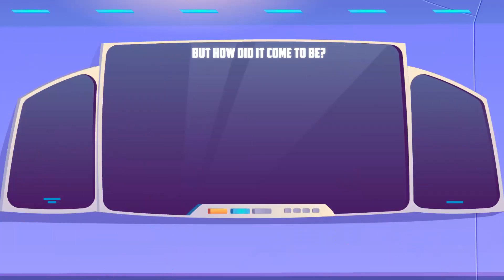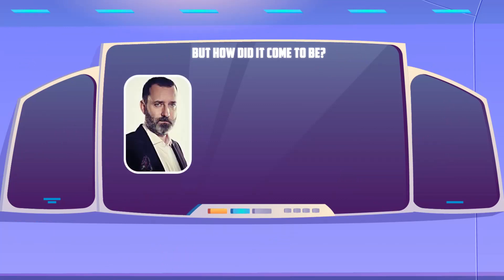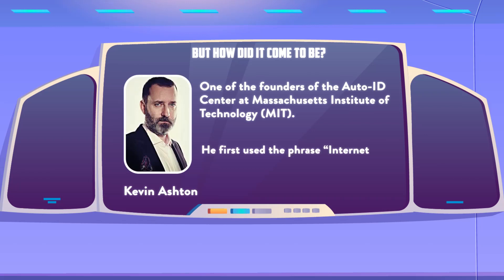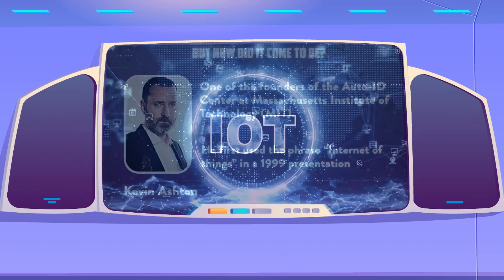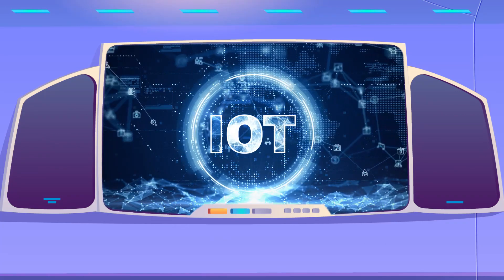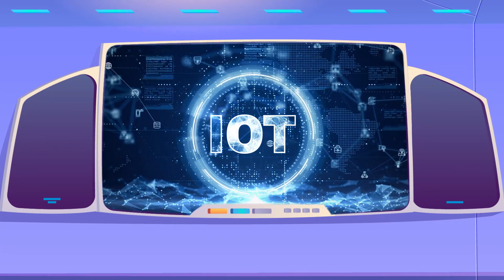But how did we come to be? Going back to its history, the term Internet of Things was coined by entrepreneur Kevin Ashton, one of the founders of the Auto ID Center of Massachusetts Institute of Technology. He used the phrase Internet of Things in a 1999 presentation and it has stuck around ever since. IoT is very significant because it makes available data that was not previously used.